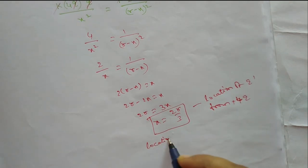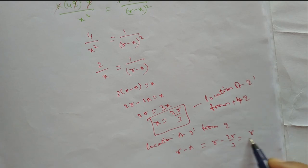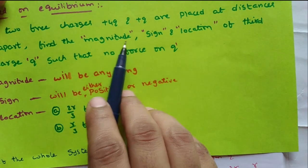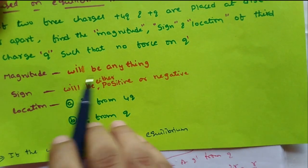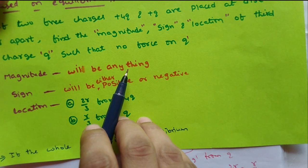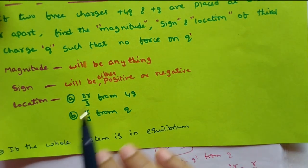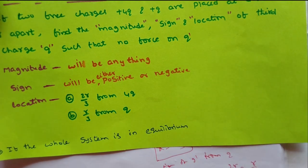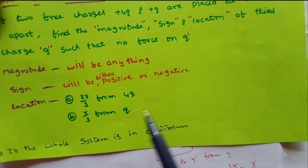The location of q dash from the plus q charge is r minus x, that is r minus 2r/3, which equals r/3. So q dash is at r/3 from the plus q charge. In conclusion, the magnitude can be any value and the sign can be either positive or negative — it doesn't matter, as both magnitude and sign cancel on both sides. What matters is only the location: 2r/3 from the plus 4q charge and r/3 from the plus q charge.